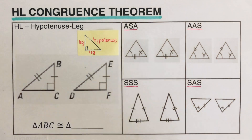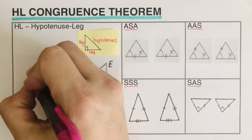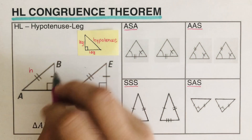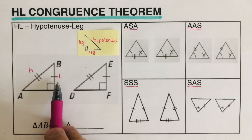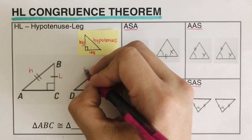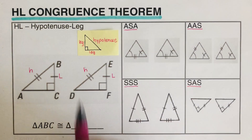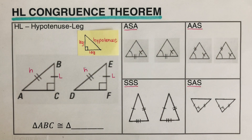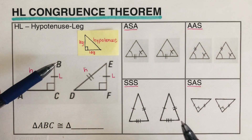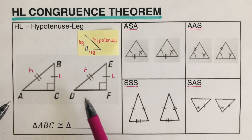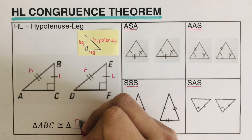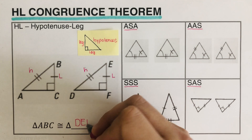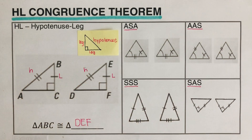In this case right here, we have a hypotenuse across from the 90 degrees, and this is a leg. So this is an HL congruence theorem — this is the hypotenuse and this is the leg, so that's HL. From here we can find their corresponding angles: A, B, C corresponding to D, E, F. So triangle ABC is congruent to triangle DEF.